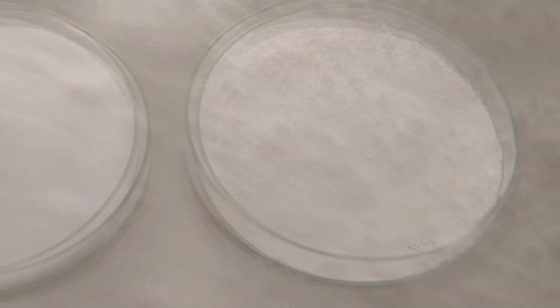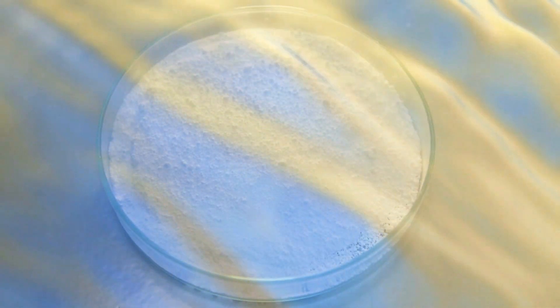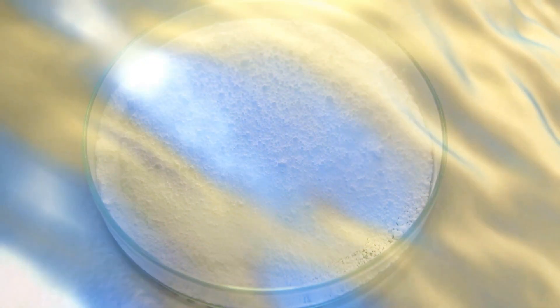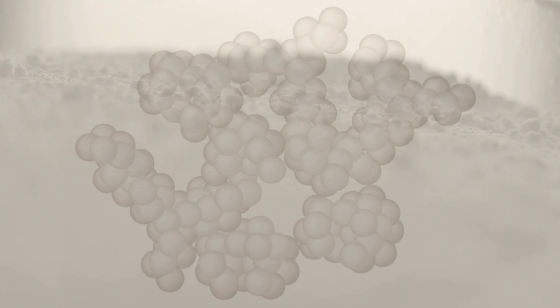Precipitated silicas, as the name implies, are precipitated, or separated, from a liquid called water glass. Its particles are more dense and sponge-like.